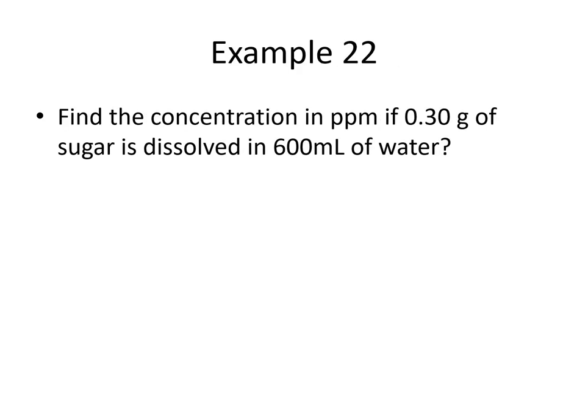So let's do an example problem. Example 22, by the way this is on page 18 of your note packet. First question is find the concentration in parts per million if 0.30 grams of sugar is dissolved in 700 milliliters of water.